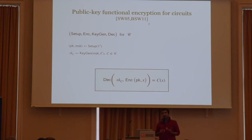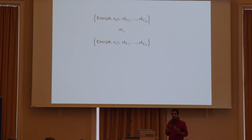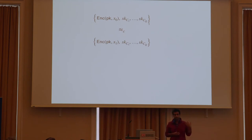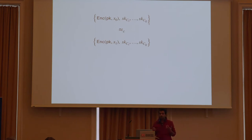Functional encryption gives more fine-grained access to encrypted data. In the case of standard public key encryption, either you can get the whole message or nothing. The security guarantee roughly says the following: the adversary is allowed to submit challenge messages X0 and X1, and also allowed to submit functional queries corresponding to circuits C1 through CQ. The challenger responds with either encryption of X0 or X1, and also gives functional keys associated with circuits C1 through CQ. The goal is for the adversary to distinguish between these two experiments.